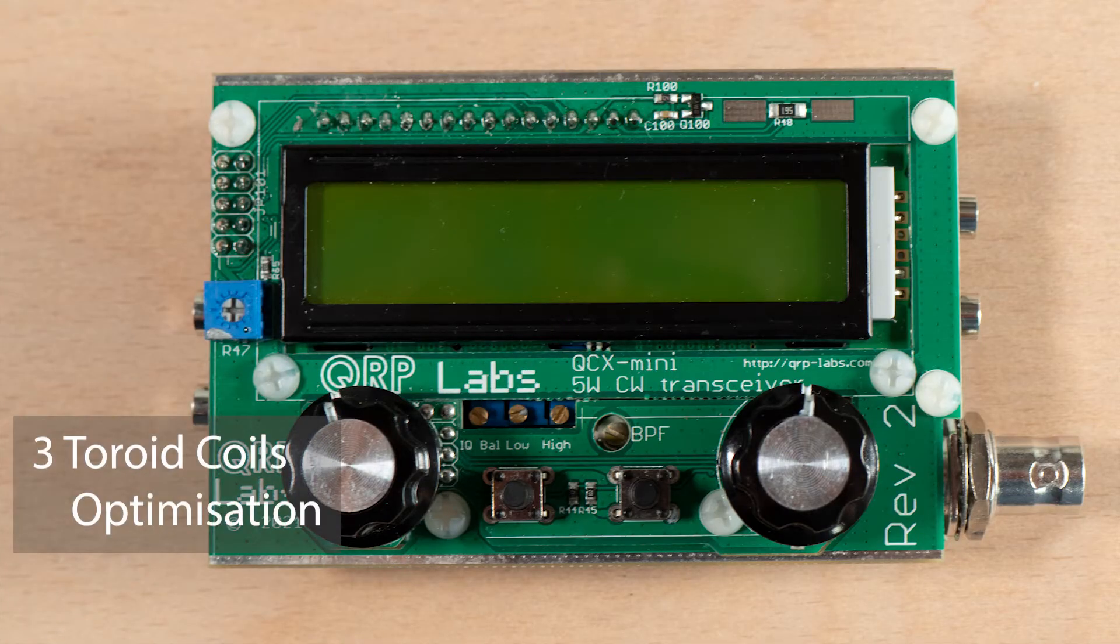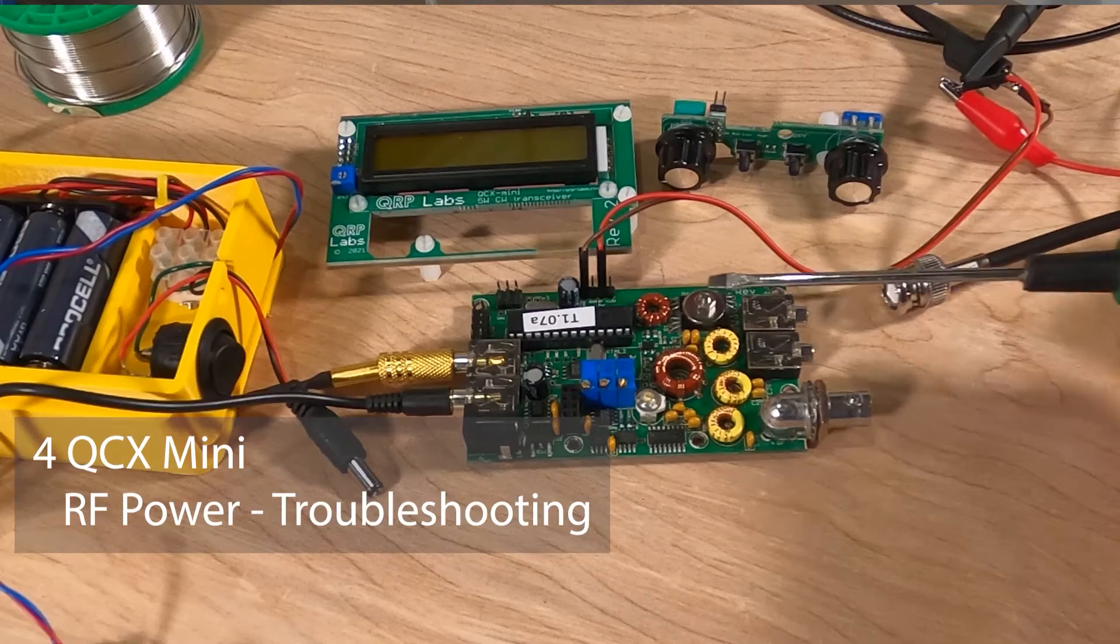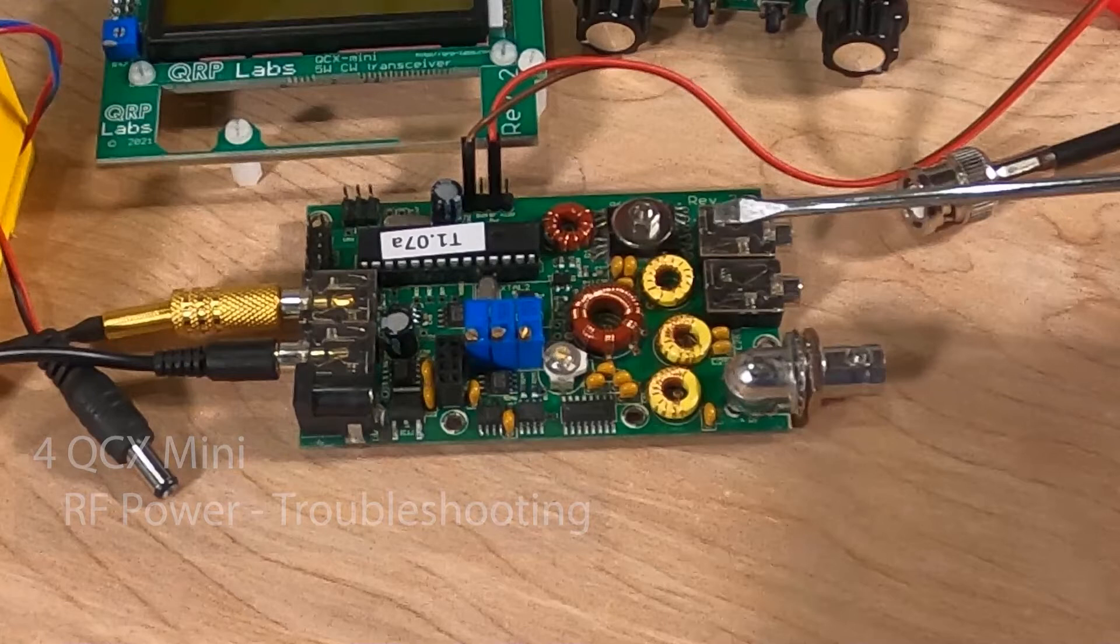While making the 20 meter QCX mini kit I had to desolder and adjust the number of turns on these coils L1, L2 and L3. I realized that this can be avoided by making sure during the coil preparation that the initial inductance of these coils can be moved up or down by pushing the turns together or apart around the toroid.